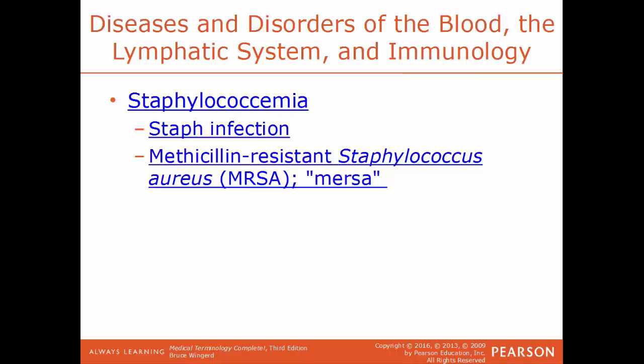MRSA requires stronger medications with more side effects than older treatments. This is common with many bacteria — due to prolonged overuse of antibiotics over the last 50-60 years, bacteria mutate and become resistant to common antibiotics. Streptococcemia is the presence of streptococci in the blood — round cocci bacteria that grow end-to-end like a pearl necklace. This is commonly called a strep infection. A common example is strep throat, caused by Streptococcus pyogenes.